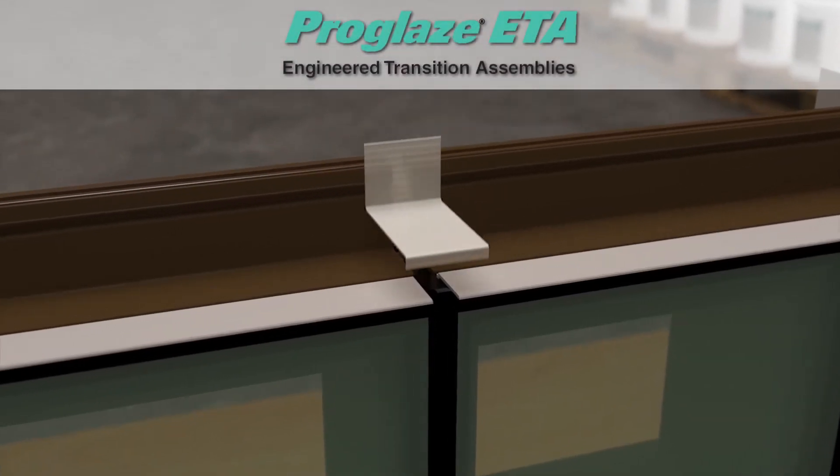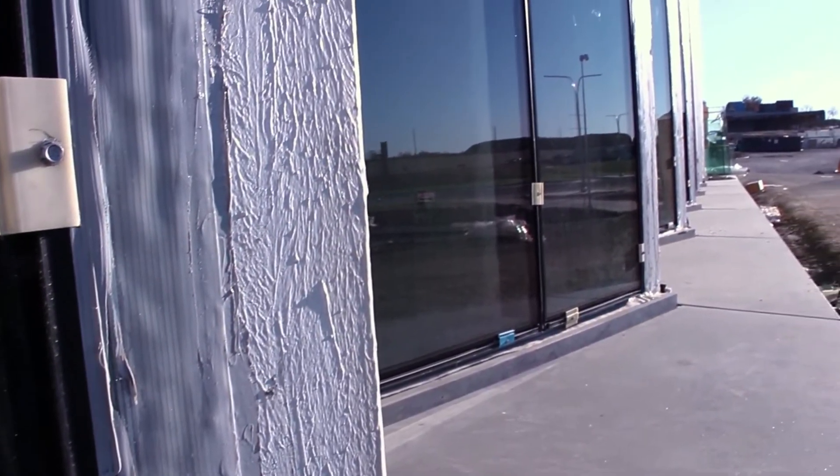ProGlaze ETA stands for Engineered Transition Assembly. What it really accomplishes is the connection from the glazing system to the wall where the air barrier is applied.